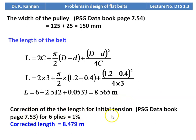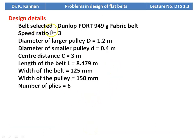We correct the length for initial tension: for 6 plies, reduce by 1 percent. Corrected length = 8.565 × 0.99 = 8.479 meters. Design data: belt selected — Dunlop Fort 949 gram fabric belt; speed ratio I = 3; diameter of larger pulley D = 1.2 m; diameter of smaller pulley d = 0.4 m; center distance C = 3 m; belt length L = 8.479 m; belt width = 125 mm; pulley width = 150 mm; number of plies = 6.